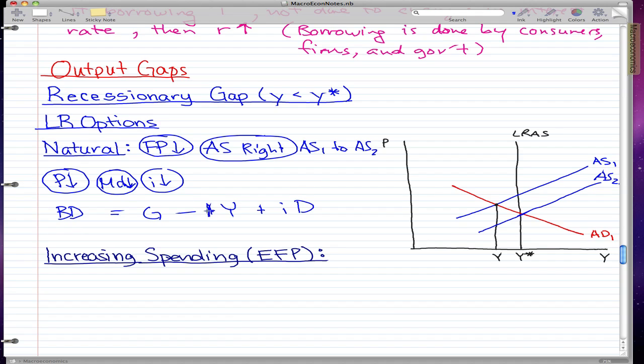So we know that price fell, money demand fell, and I fell as well. And we know that Y went up because we fixed the recessionary gap. So Y increased and the interest rate decreased. So essentially, what we're saying is that our total income increased and our interest rate decreased.